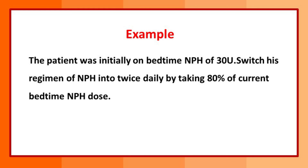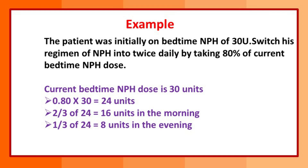The question means: the patient is already on 30 units of NPH. We need to give this dose twice daily by first taking 80% of 30 units. Try to solve this — reduce 80% of 30 units and then think about how you will divide this dose for the day, based on what we learned about insulin augmentation.